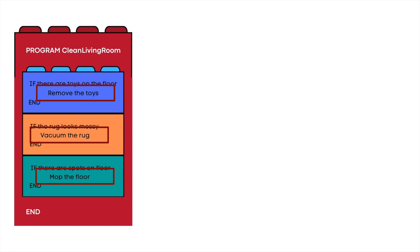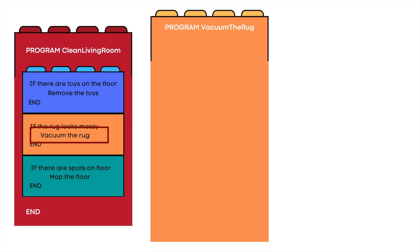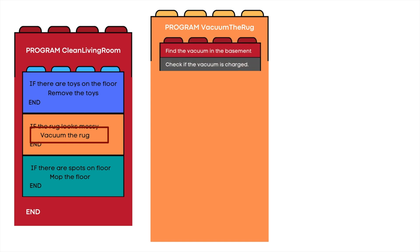Each of these functions would require some additional instructions and conditions. Using the modular approach, we can create a separate, independent program — also known as a module — that will house those additional instructions and conditions. For example, a module for the function 'vacuum the rug' would look something like this: Program 'Vacuum the Rug' — find the vacuum in the basement, check if the vacuum is charged.